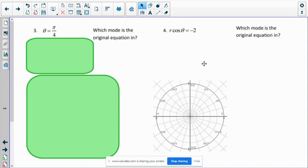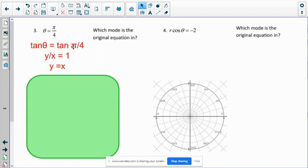So number three is a little more tricky in that I really need to get rid of the theta. And so what I'm going to do is I'm actually going to take the tangent of both sides. And so by doing that, I can then know what tangent of pi over four is. That's a nice one. It's just one.